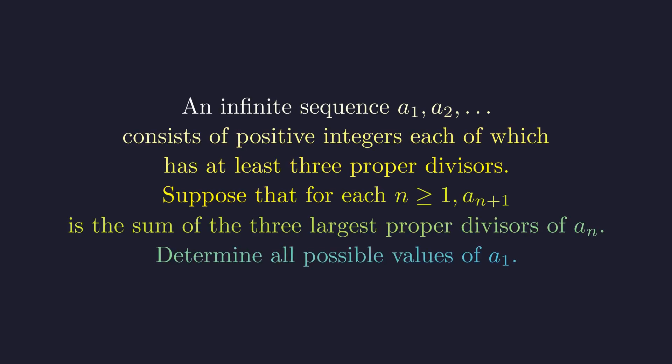We are given an infinite sequence of positive integers a1, a2, and so on. Each term must have at least three proper divisors. The rule connecting the terms is that a_{n+1} is the sum of the three largest proper divisors of a_n. The problem asks for all possible values of the first term, a1.